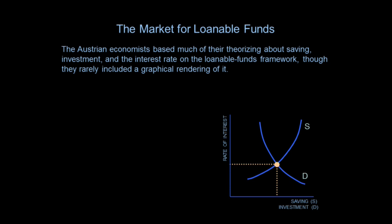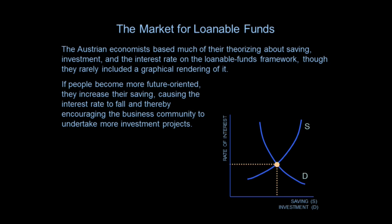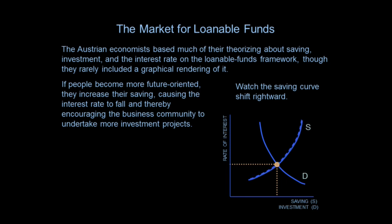The Austrians tend not to use diagrams — it's an outlier when Hayek drew the triangle. But they argue in terms of loanable funds. So if people become more future-oriented, that means they save more, and the savings curve shifts to the right. When they do, it reduces interest rates and offers up more savings for investors to invest. Investors borrow more so than before because it's cheaper, and they can think of projects that have yields somewhere between those two horizontal dotted lines that they couldn't undertake before but can now.